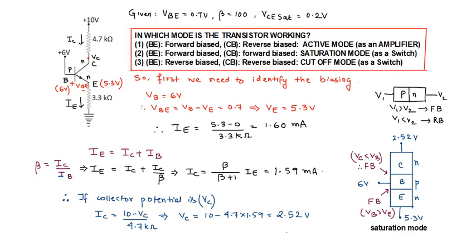Now we know the collector current through the 4.7KΩ resistor. If the collector potential is VC, then the collector current equals (10 - VC) / 4.7KΩ, giving VC = 2.52V. We have now calculated the potentials: collector at 2.52V, base at 6V, and emitter at 5.3V. For the base-emitter junction, the base is P-type and the emitter is N-type. Since the base is at 6V and the emitter is at 5.3V, the P side is at higher potential — so the base-emitter junction is forward biased.